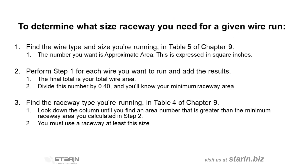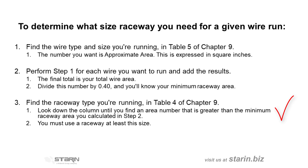If you need to specify the raceway size you'll be needing, you first find the outer diameter of the wire you're running and then find its approximate area in square inches. Next, multiply this by the number of wires you'll be running. Divide this number by 0.4 to find the minimum raceway area. Then, in Table 4, look down the column until you find an area number just greater than the number you just calculated. This is the minimum raceway size.